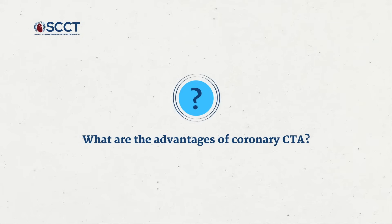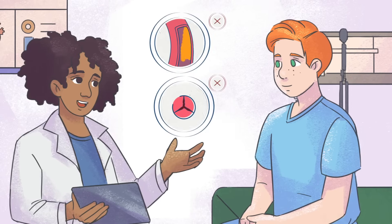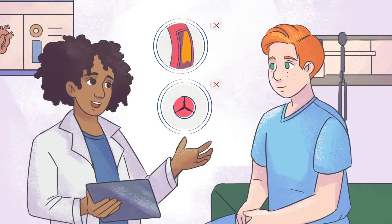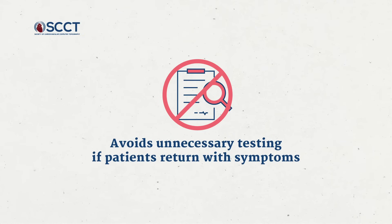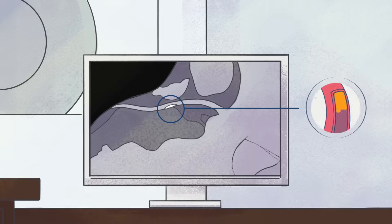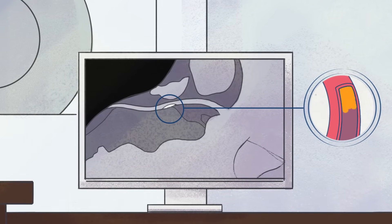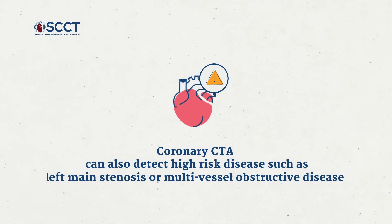What are the advantages of coronary CT angiography? A coronary CTA is a rapid and safe exam — it only takes several seconds to perform. It is also highly accurate. When a coronary CTA is negative, showing no plaque or stenosis, it can effectively rule out the presence of any disease. This is reassuring to patients and avoids unnecessary testing if patients return with symptoms. Coronary CTA can detect a wide spectrum of disease, including non-obstructive plaque, which generally cannot be identified with a stress test. And on the other end of the spectrum, it can also identify high-risk disease, such as left main stenosis or multi-vessel obstructive disease.